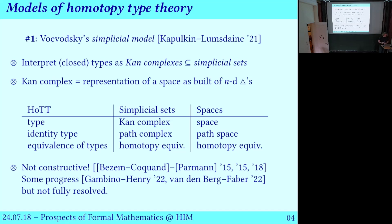Coming at this from the perspective of models: the first model of homotopy type theory was Vladimir Voevodsky's simplicial model, written up later by Christopher Fulkin and Peter Lumsdaine. It was floating around before 2021 but finally published in 2021. The idea is to interpret the types of homotopy type theory as Kan complexes — specific simplicial sets — which are a combinatorial representation of a space built by connecting higher-dimensional triangles together.